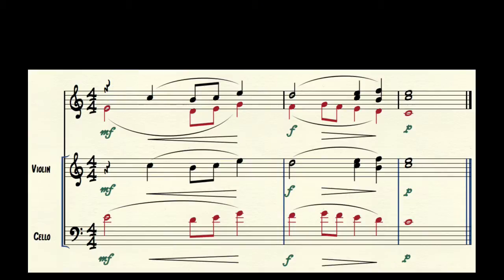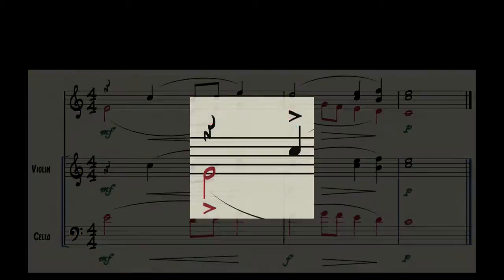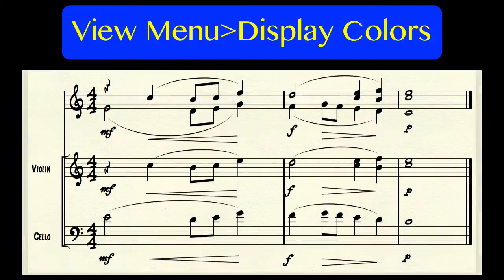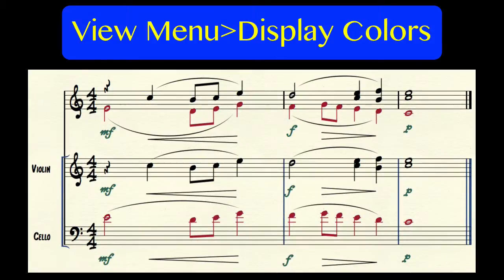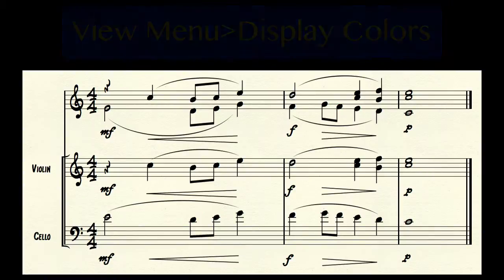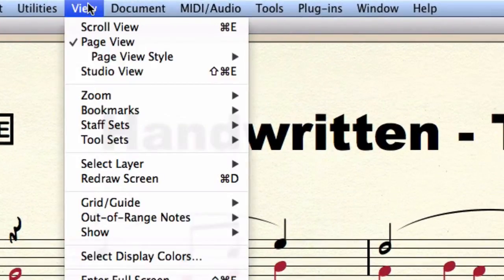I find colors very helpful while working with different layers because there will be no confusion about which layer a note belongs to. Furthermore you can tell Finale to show elements attached to a specific layer in that layer's color. We have the option to turn colors for on-screen viewing on or off in the display colors preferences dialog box which you can open from the view menu.